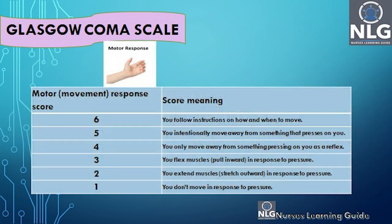For the motor response component, the highest score is 6 and the lowest is 1. A score of 6 means the patient is following instructions very well. A score of 1 means the patient does not move at all — there is no response.